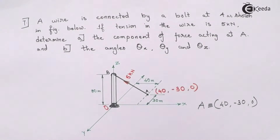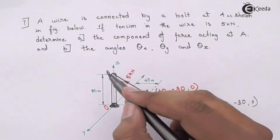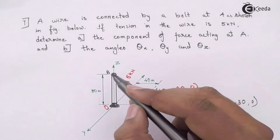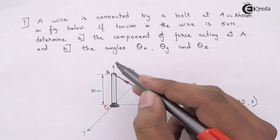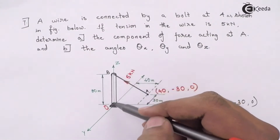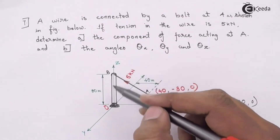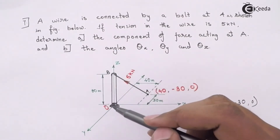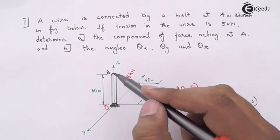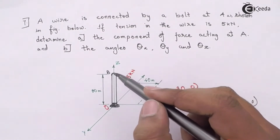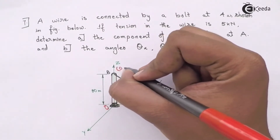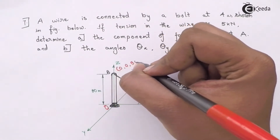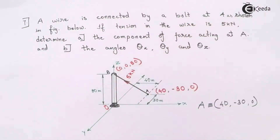Similarly, I need to find the coordinates of point B. Point B is lying on the Z axis, so all I need is the height of this pole, which is given as 80 meters. I won't have an X coordinate or Y coordinate in this case, so the coordinates of B are (0, 0, 80).